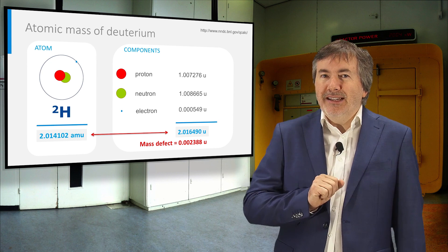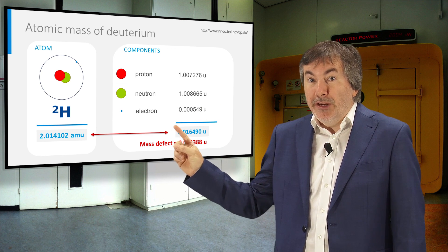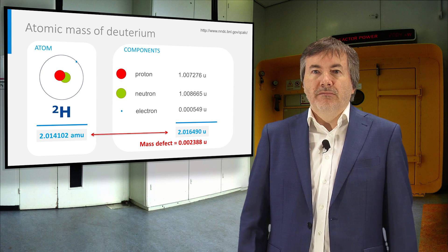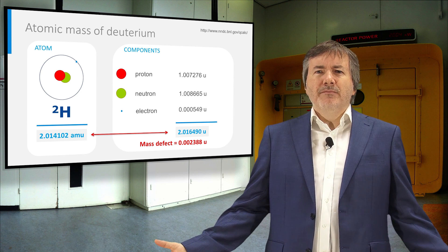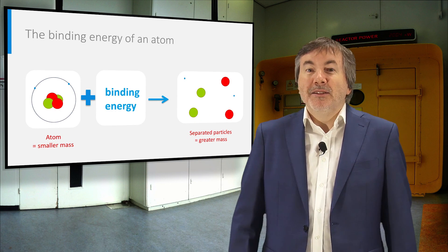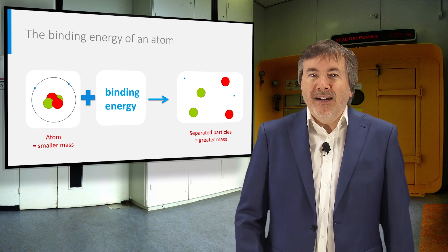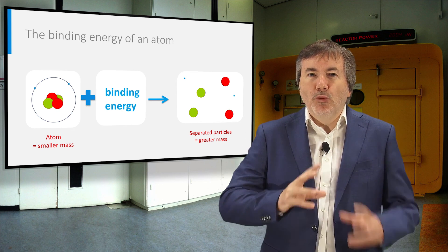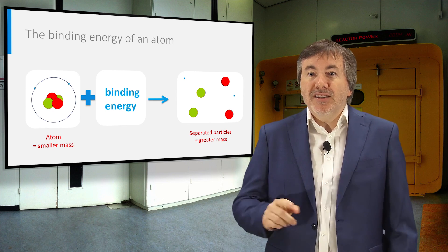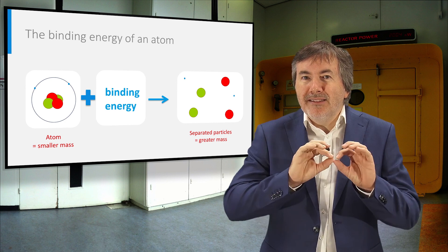However, the funny thing is that the sum of the individual masses of these three particles is higher than the mass of deuterium. So where is the missing mass? The missing mass corresponds to the binding energy. The binding energy is the energy needed to pull each particle apart from the nucleus. Einstein's formula makes the link between the binding energy and the mass defect.